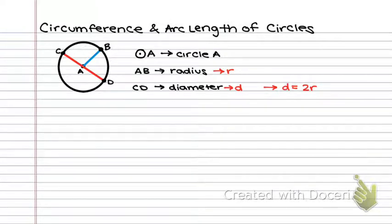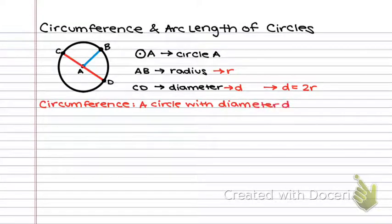All right, so let's get into circumference. Or sorry, let's get into circumference. Circumference is basically the circle equivalent of perimeter. So circumference is defined as a circle with diameter d and radius r. Just like we mentioned up above.